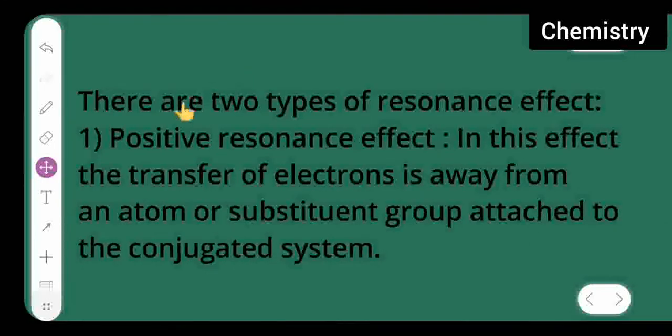There are two types of resonance effect. One is positive resonance effect. What is a positive resonance effect? In this effect, the transfer of electrons is away from an atom or substituent group attached to the conjugated system.